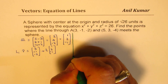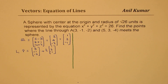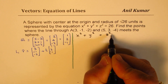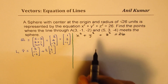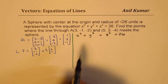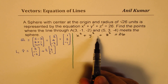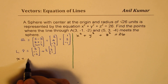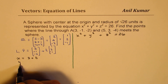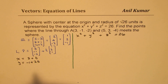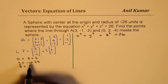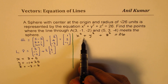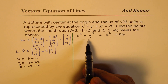We know that the sphere is represented by x squared plus y squared plus z squared equals 26. Now, substituting a general point into this equation, we can find the point of intersection. So a general point gives x equals 3 plus t, y equals minus 1 plus 2t, and z equals minus 2 minus t. These are our general points.